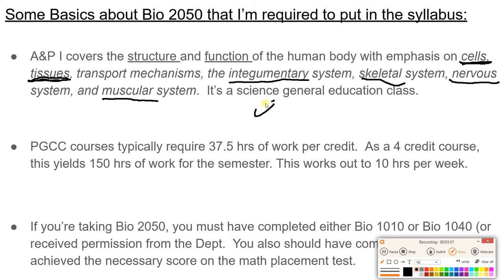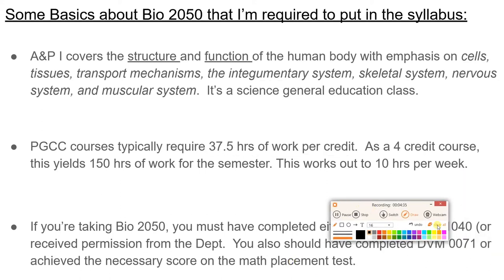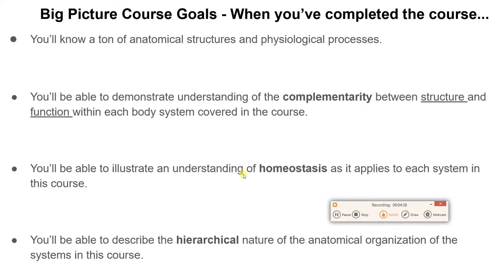This is considered a science gen ed class. These classes are supposed to require 37 and a half hours of work per credit. It's a four-credit course, so that's 150 hours of work for the semester — roughly 15 weeks, about 10 hours per week. If you're taking this course, you should have taken BIO 1010 or 1040, or gotten permission, and completed the required math placement.